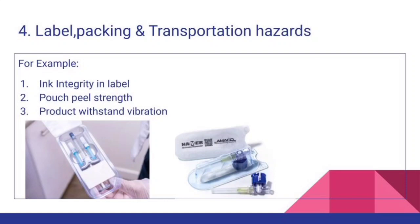The next type of hazard is label, packing, and transportation hazards — for example, ink integrity in the label, pouch seal strength of the packing pouch, and the product withstanding vibration if it is in a carton or corrugated box packing during transportation.